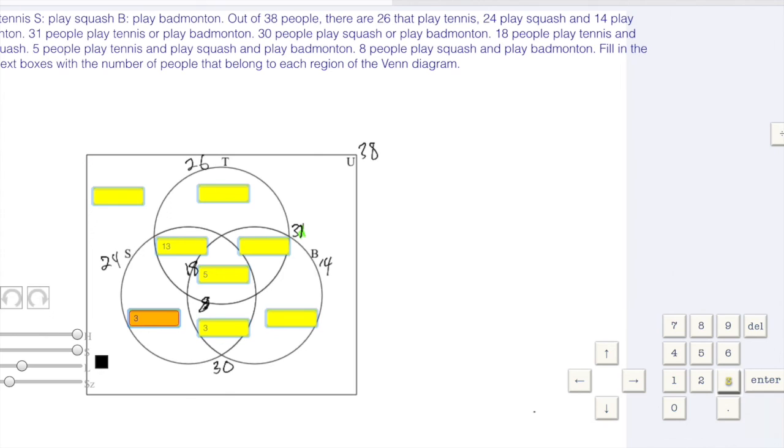I know that there are 31 that play tennis or badminton. 26 in tennis plus the 3 and this mystery number has to add up to 31. 26 plus 3 is 29 plus 2 more, so that has to be a 2, is 31.